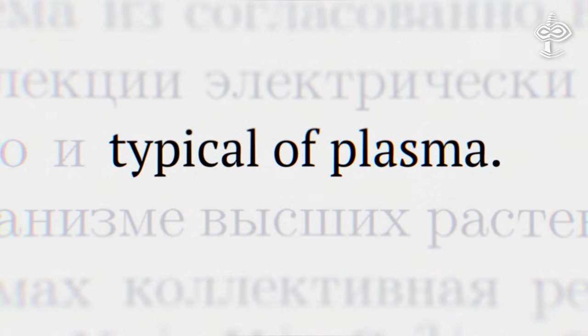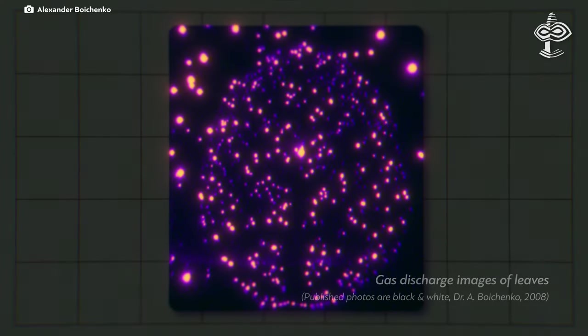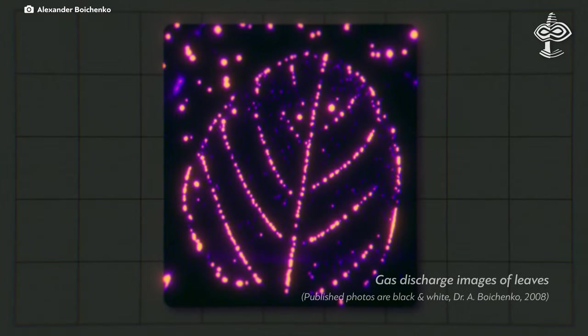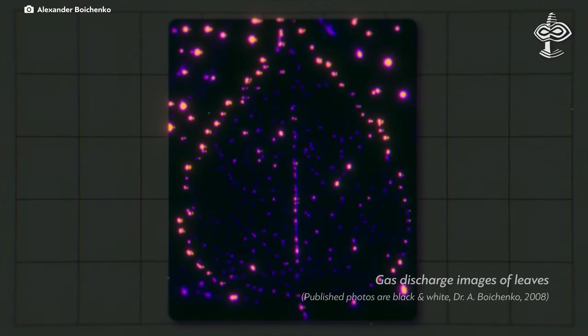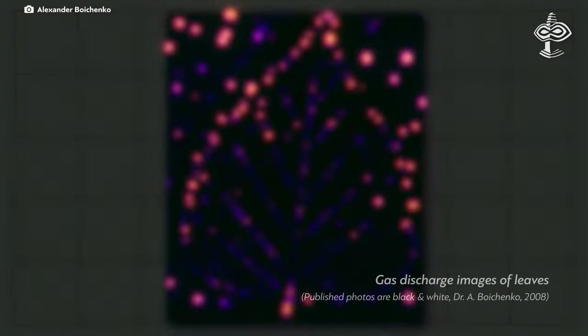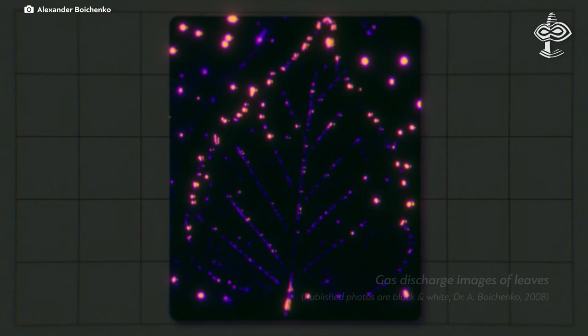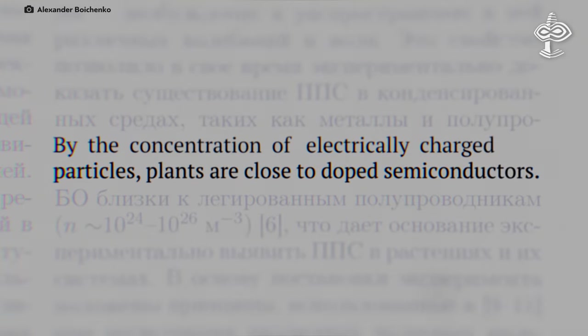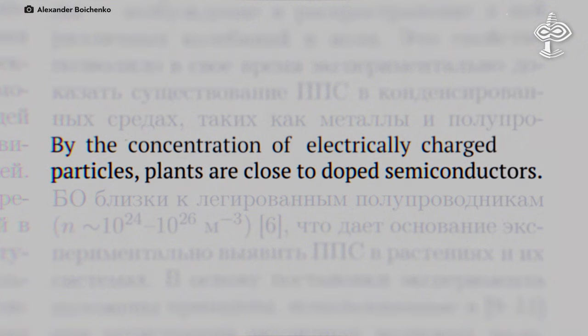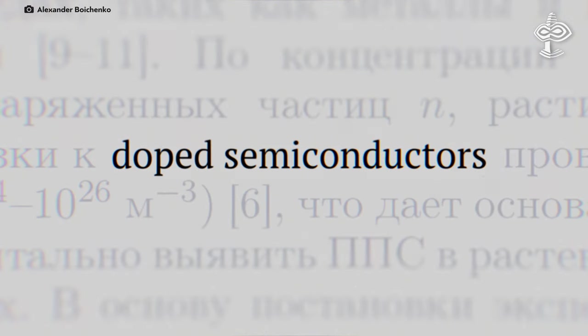It's also important that the structure of this bioplasma makes it similar to the cold plasma made in a gas barrier that is not in a state of balance. Dr. Boichenko noted that by the concentration of electrically charged particles, plants are close to doped semiconductors.